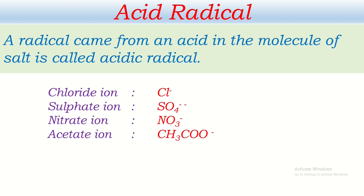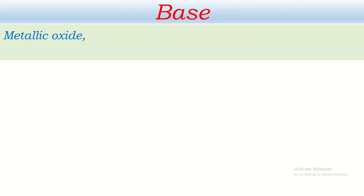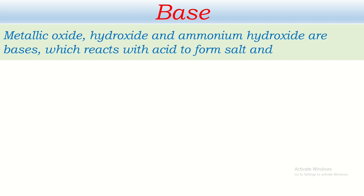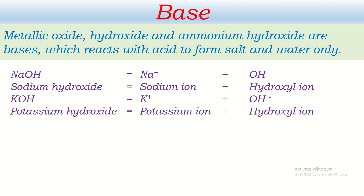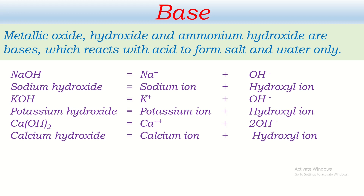Now let's talk about base and basic radical. Metallic oxides, hydroxides, and ammonium hydroxide are bases, which react with acid to form salt and water. If a base dissolves in water, it gives hydroxyl ion. For example, sodium hydroxide gives hydroxyl ion, potassium hydroxide gives hydroxyl ion, and calcium hydroxide gives calcium ion and hydroxyl ion.